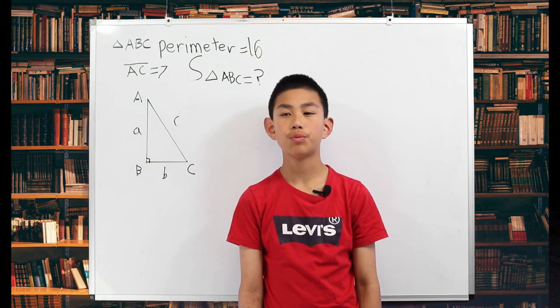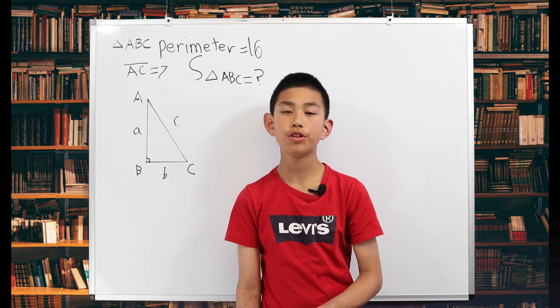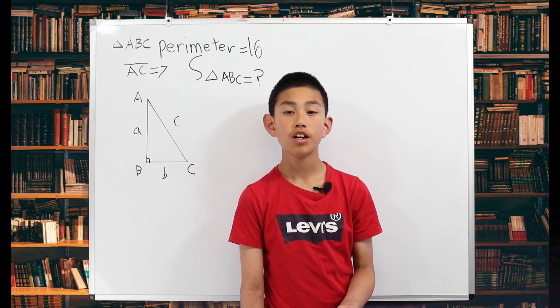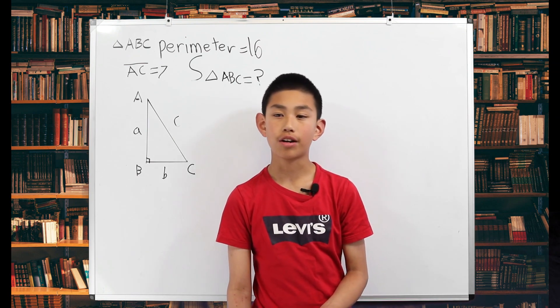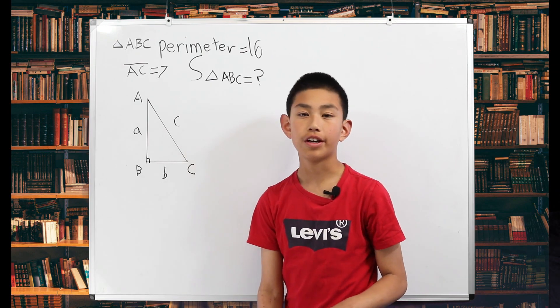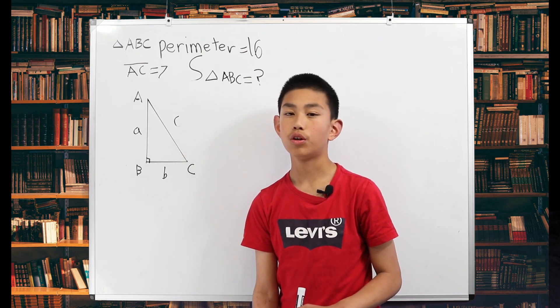So when we are presented with this problem, we shouldn't start solving immediately. We need to know what it's asking. And what it's asking is the area of this right triangle. And the area is A times B over 2.